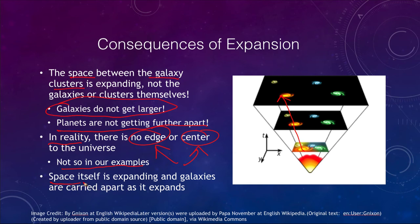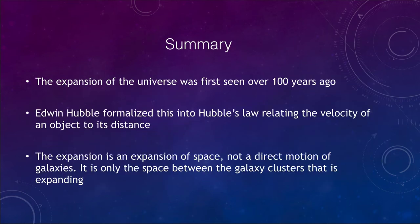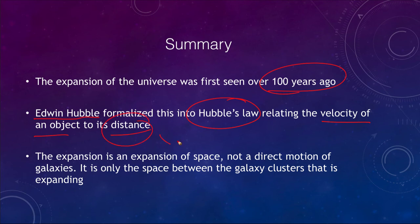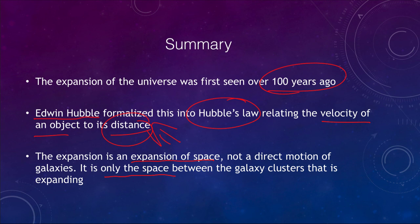Space itself is expanding, carrying galaxies and galaxy clusters apart as it expands. To summarize: we have observed evidence of the expanding universe for the last 100 years. Edwin Hubble's Law related the velocity of an object to its distance, giving us a new method of determining distances that works out to the edge of the universe. The expansion is an expansion of space — not a direct motion of galaxies — and it is only the space between galaxy clusters that is actually expanding. This concludes our lecture on the expanding universe.